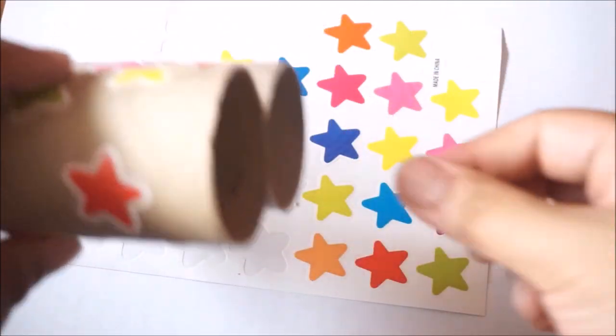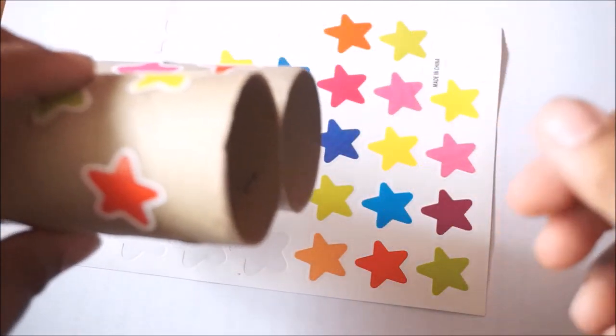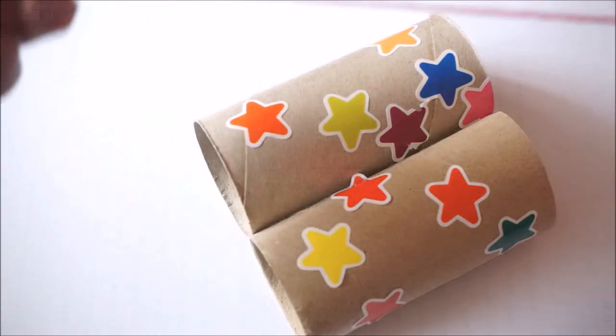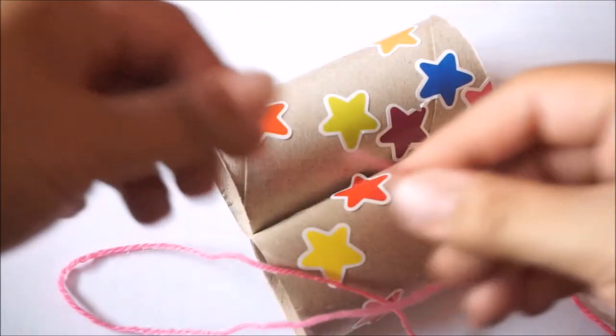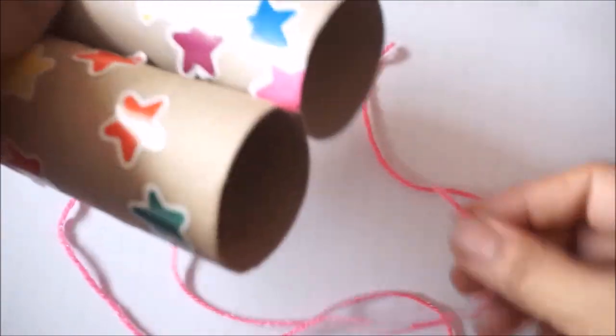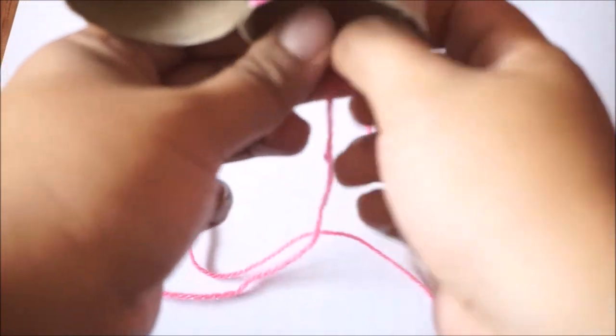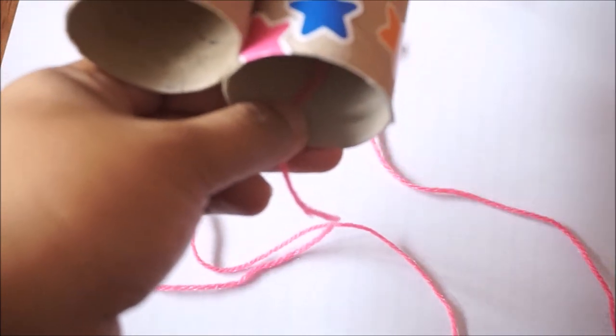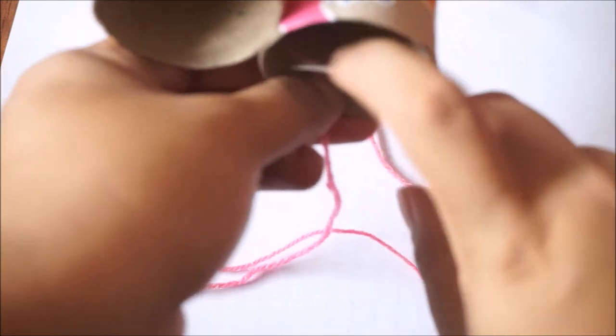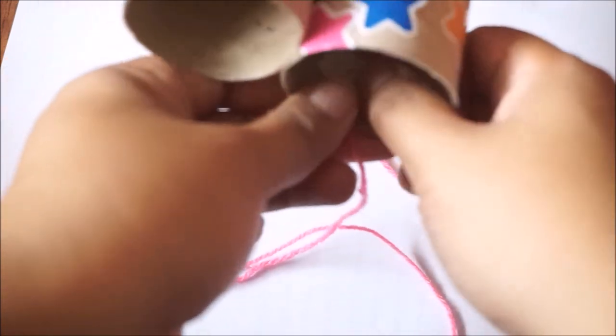And now, we can put something on this side so that we can hang it on our neck. We can now get the yarn that we cut and let's put it here. I don't have tape right now, so I'm just going to use double-sided tape to stick it here inside to hold it, just like this. There.